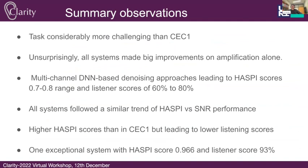To summarize: the task is considerably more challenging than KEK1. Unsurprisingly, all systems made big improvements over the amplification-alone baseline. Multichannel DNN-based denoising approaches led to HASPY scores in the range of 0.7 to 0.8 and listener scores in the range of 60–80% words correct. All systems followed a similar trend of HASPY versus SNR performance. We're seeing higher HASPY scores than in KEK1, but leading to lower listening scores, possibly because teams have more aggressively optimized for HASPY. One exceptional system achieved a HASPY score of 0.966 and a listening test score of 93%.